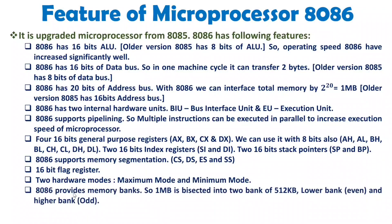With 8086, there are memory banks. The 1 MB of memory is bisected into two banks of 512 KB each. One 512 KB bank holds even addresses and the other 512 KB bank holds odd addresses. For more detail on memory banks, refer to the separate video on that topic.